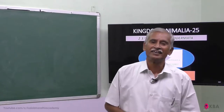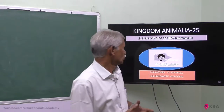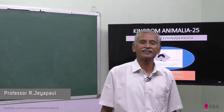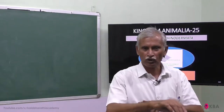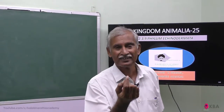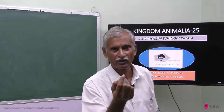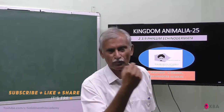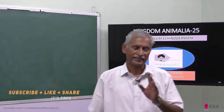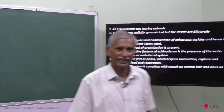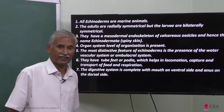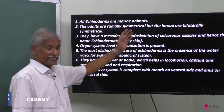Welcome to Echinodermata Phylampathy. Today we will talk about Echinodermata. What is Echinodermata? They all have spines and plates. This is called Echinodermata. All are marine animals, all have a cell wall and are radially symmetrical.